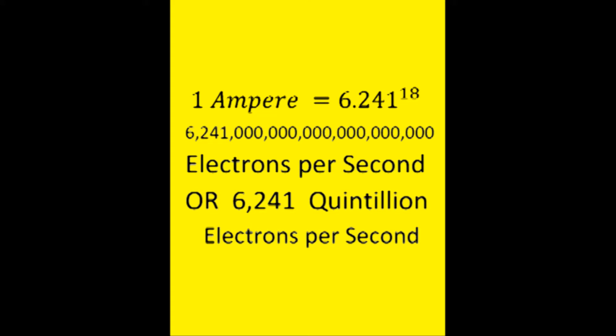I'd like to take a moment and explain just what an ampere represents. One amp is 6.241 times 10 to the 18th electrons moving through a conductor for one second.